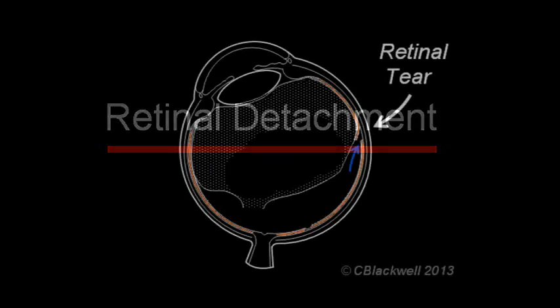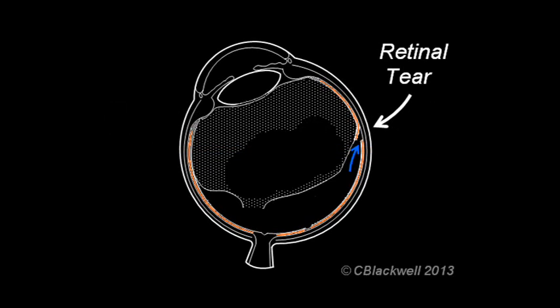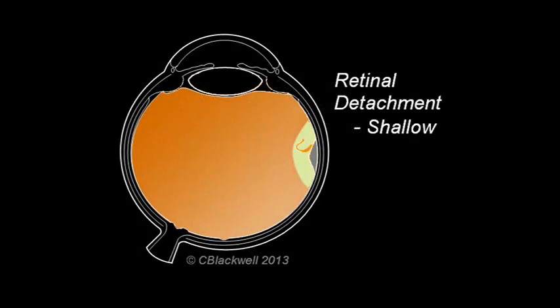A tear is a hole that allows the liquid part of the vitreous to get underneath the retina. And so the retina starts to detach from the wall of the eye. Technically, the amount of fluid going through the hole has to exceed the ability of the underlying pigment cells to pump it out. In my 3D view, this is meant to show the tear and a shallow elevation of the retina.